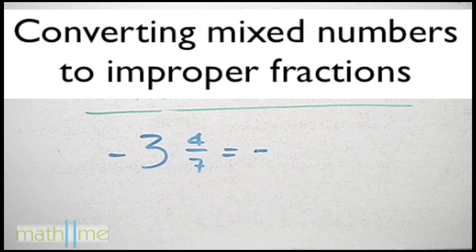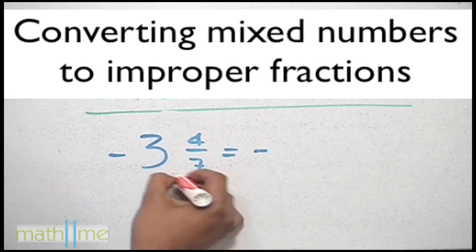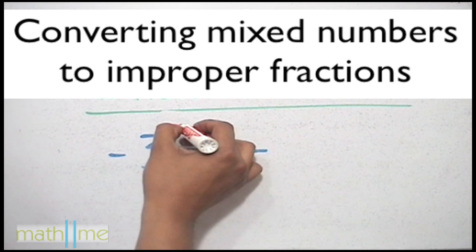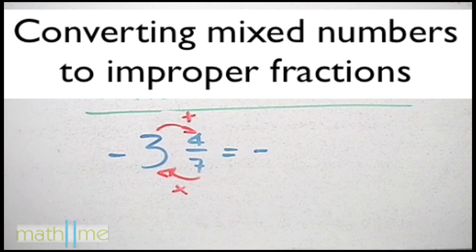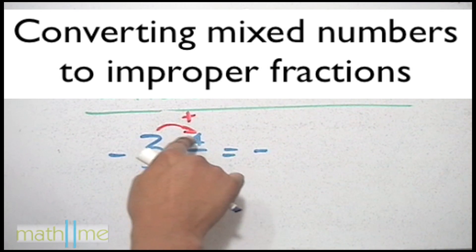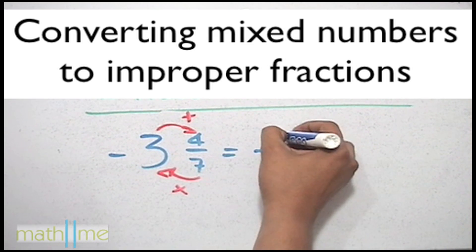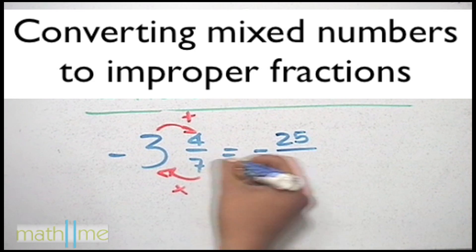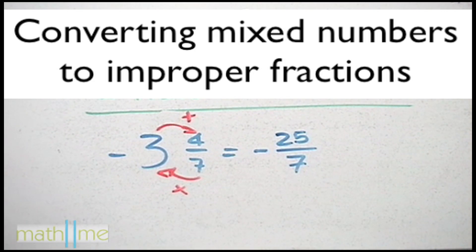That is, multiply the denominator and the whole number and add the result to the numerator. Multiplying 7 times 3 equals 21 plus 4 equals 25. And the denominator remains 7. This improper fraction is the same as this mixed number.